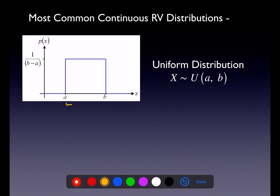You can see that the variable goes from A to B — I can't make a list, I have to make a graph of the possible values. When you hear uniform, it literally means that the height is the same for every single value. Whatever the width of that rectangle — the base — the height is its reciprocal.